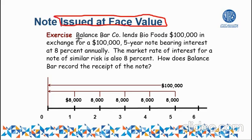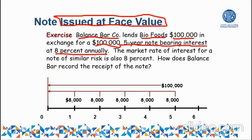Let's go through the numerical data. We are representing Balanced Bar Co., a company which has given another company called Bio Foods $100,000. In return, the Bio Food company has given them a $100,000 note with a life of 5 years, and Bio Food has promised to pay 8% interest annually to Balanced Bar.